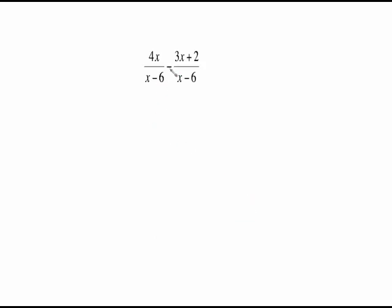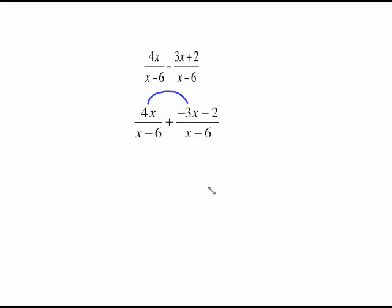Here's a similar problem. The minus needs to distribute through the numerator, so right away change it to a plus and distribute the negative through, which gives you the next line. You have a common denominator; keep it and combine like terms. 4x minus 3x gives us x minus 2 over x minus 6. Sometimes people try to cancel those x's, but x minus 2 is a binomial and x minus 6 is a binomial — you can never cancel part of one binomial with part of another.